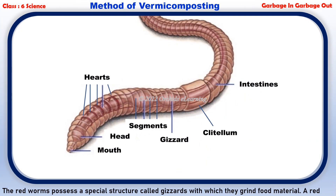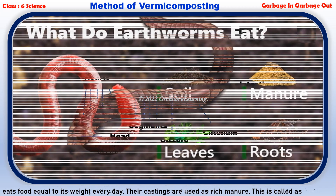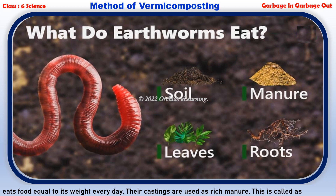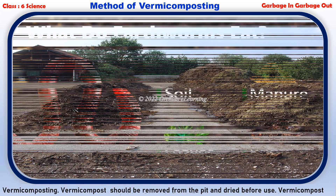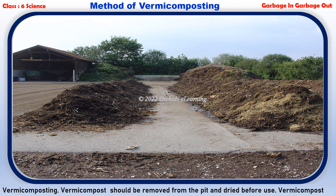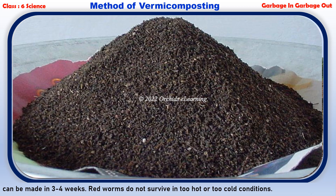A vermicomposting pit takes nearly two to four weeks to completely convert waste into manure. The red worms possess a special structure called gizzards, with which they grind food material. A red worm eats food equal to its weight every day, and their castings are used as rich manure. Vermicompost should be removed from the pit and dried before use. Red worms do not survive in too hot or too cold conditions.